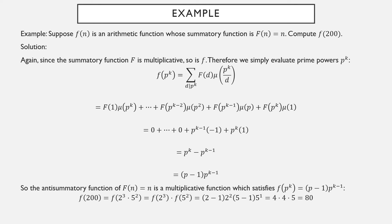Now we evaluate f(200). We factor 200 = 2³ × 5². Since f is multiplicative, f(200) = f(2³) · f(5²). For the prime 2 with power 3: f(2³) = (2-1)·2^(3-1) = 1·4 = 4. For the prime 5 with power 2: f(5²) = (5-1)·5^(2-1) = 4·5 = 20. Multiplying gives f(200) = 4 × 20 = 80.